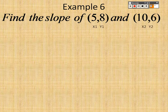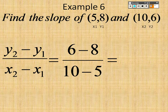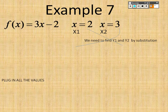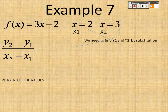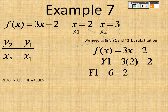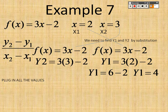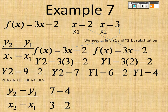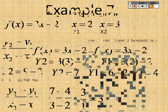Let's find the slope: 6 minus 8 over 10 minus 5 gives negative 2/5 as the slope. For example seven, x1 is 2 and x2 is 3. We find y1 and y2 by substitution: plugging in x equals 2 gives 3 times 2 minus 2, which is 4, so the point is (2, 4). Plugging in x equals 3 gives 3 times 3 minus 2, which is 7, so the point is (3, 7). Then 7 minus 4 over 3 minus 2 gives a slope of 3.